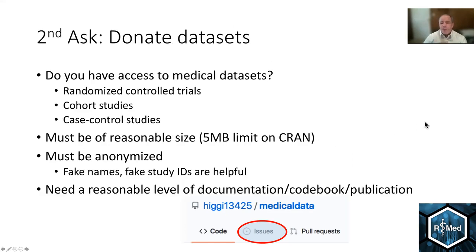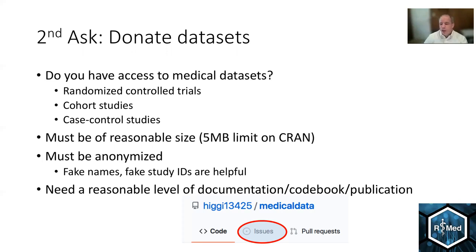The second ask is for folks to donate data sets and make this an expanding package. If you have access to medical data sets like randomized controlled trials, cohort studies, or case control studies that are of reasonable size — not 600,000 rows because there's only a five megabyte limit on CRAN — and they can be anonymized. Fake names and fake study IDs are helpful, but it can't be traceable or in any way be a HIPAA violation, and you have to have appropriate permissions to share the data along with a reasonable level of documentation, possibly a code book or even a publication. Again, open an issue, let me know about it, start the discussion.